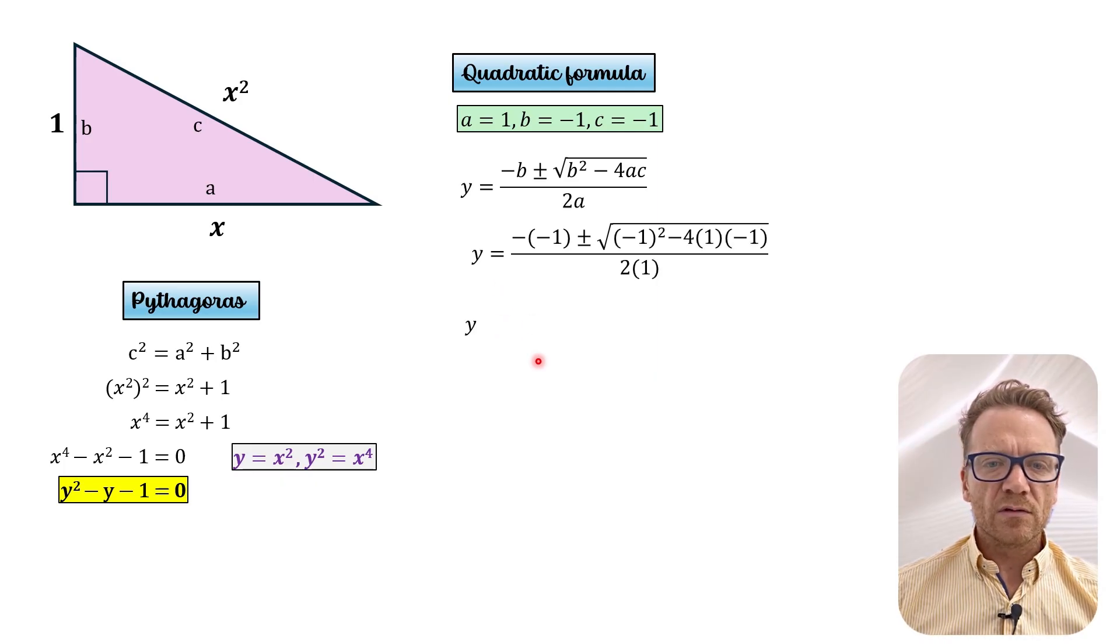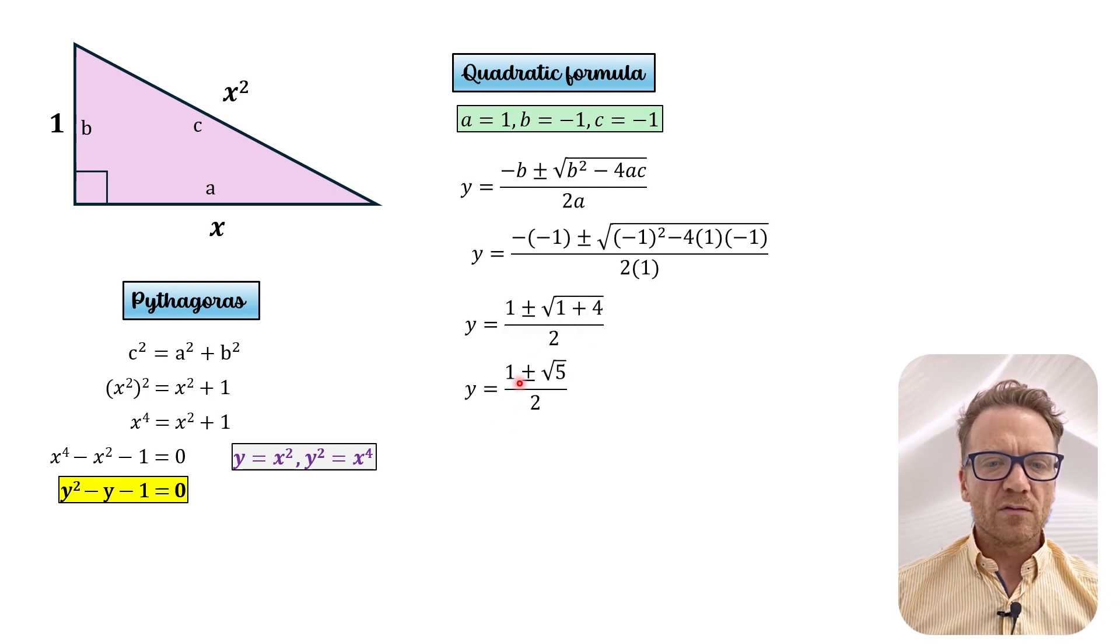Like so. And we can simplify that then to y equals 1 plus minus square root 1 plus 4 over 2. Which is 1 plus or minus square root 5 over 2. So this gives us two possibilities.